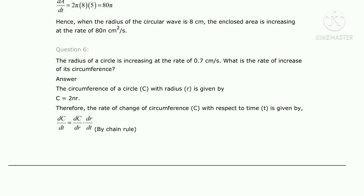Next is question number 6, which is a very simple question. The radius of a circle is increasing at the rate of 0.7 cm per second. So if we define the radius by r, then dr/dt = 0.7 cm per second. First, we write down: dr/dt = 0.7 cm per second.